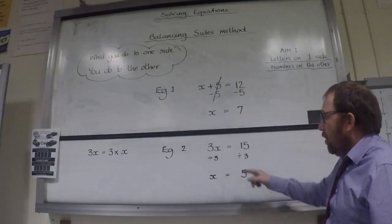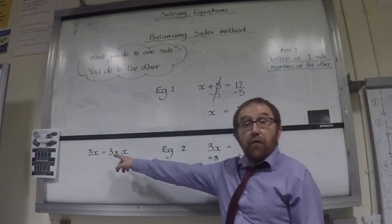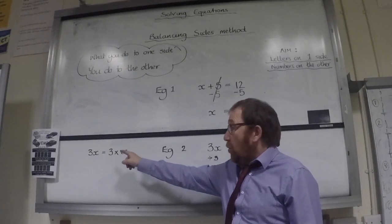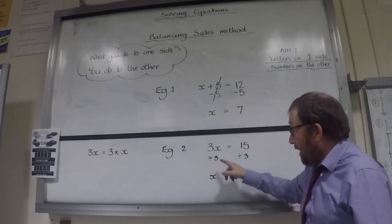In this next example, we have 3x equals 15. We recognize that 3x means 3 times x. So if I want to get rid of 3x to change it to x, I must divide by 3.